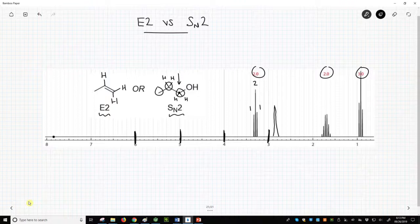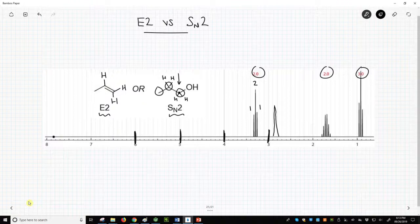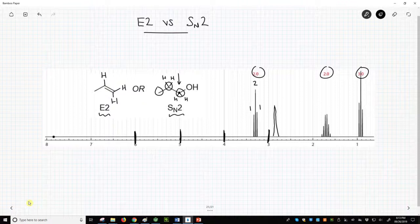OHs and NHs tend to be broader than CH peaks. For our spectra, we will assume that OH hydrogens, NH hydrogens also, do not act as vicinal hydrogens or affect multiplicity. We therefore show OH and NH peaks as singlets.